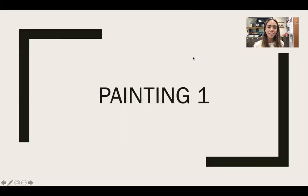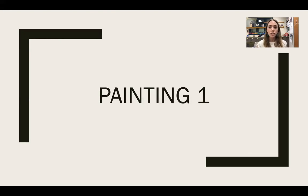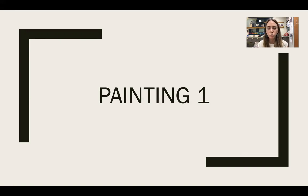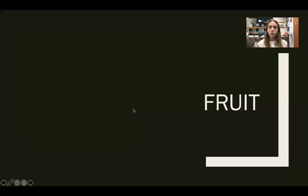This is Mrs. Wallace and I'm going to talk about what we do in Painting One. Painting One has two prerequisites: Intro to 2D and Drawing One. You must go from Intro to 2D to Drawing One, and pass Drawing One with a C minus or above to be able to take Painting One.